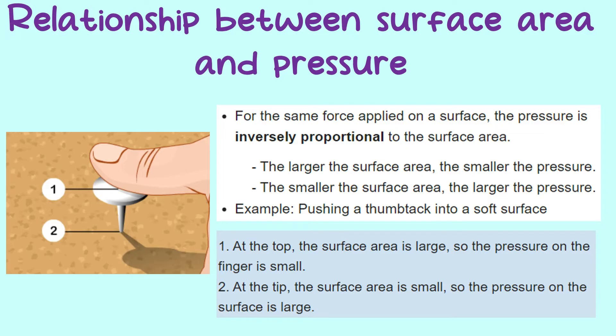As you can see in the figure on the left, at number 1, on the top of the thumbtack, the surface area is large, so the pressure on the finger is small.